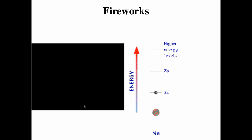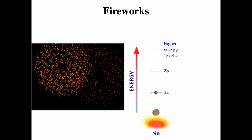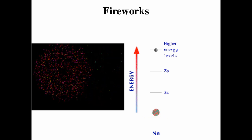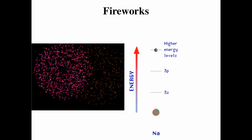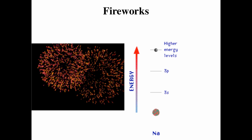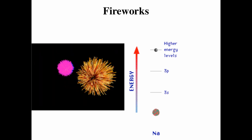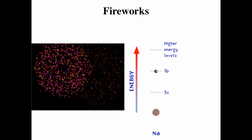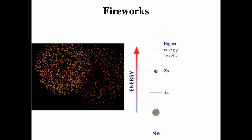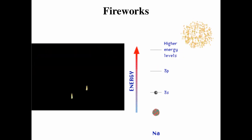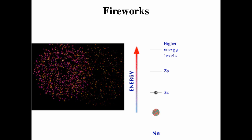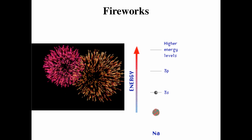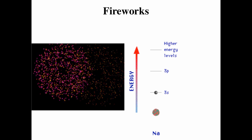When fireworks burn, the heat of the combustion reaction provides energy to allow electrons in metal atoms to move into different subshells farther from the atoms' nuclei. Those electrons quickly move back into their original subshells, releasing energy as they return. That energy is released as photons of electromagnetic radiation. If the emitted radiation is in the visible region of the spectrum, we see color, and the color is unique to the compound in the fireworks because each element has a unique set of electron energy levels.